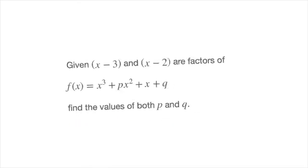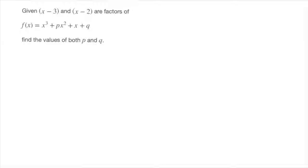To do this, let me start by moving the question to the side. Since we're looking for two unknowns, namely p and q, we're going to need two equations. To obtain those two equations, we need to use each of the two bits of information given in the question: the first being that x minus 3 is a factor, the second that x minus 2 is a factor.